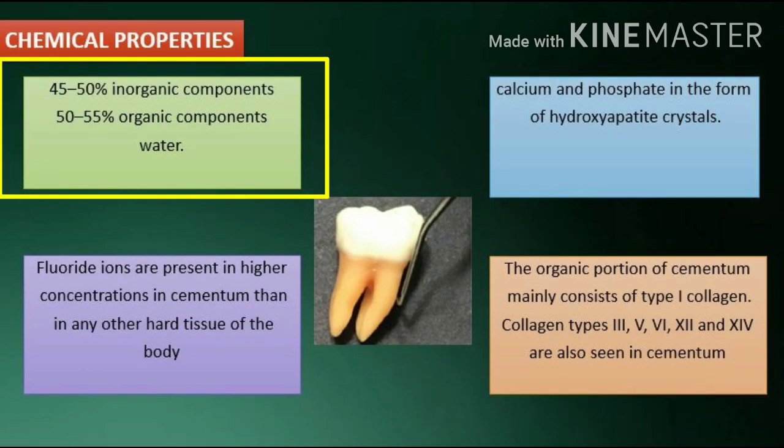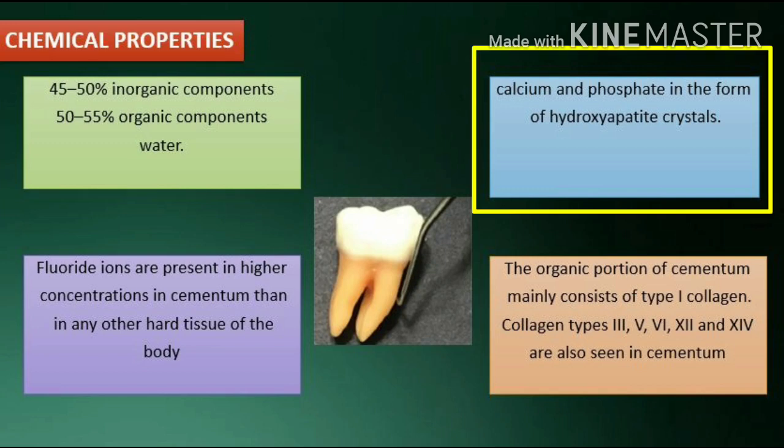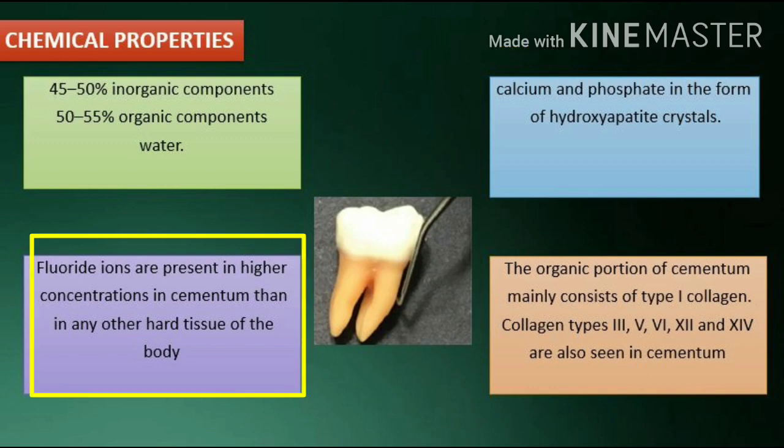Chemical properties of Cementum: Cementum consists of around 45–50% inorganic components and 50–55% organic components and water. It consists of calcium and phosphate in the form of hydroxyapatite crystals. Fluoride ions are present in higher concentrations in Cementum than in any other hard tissue of the body.